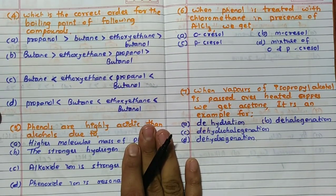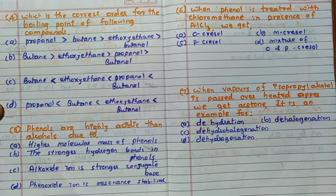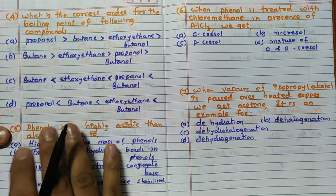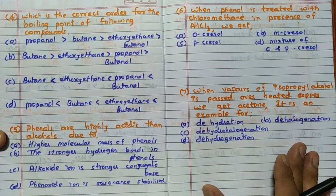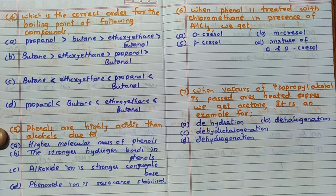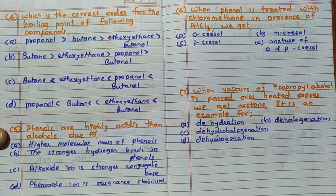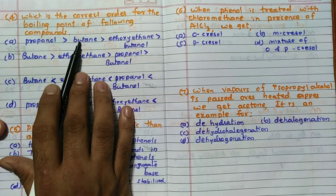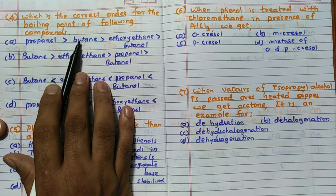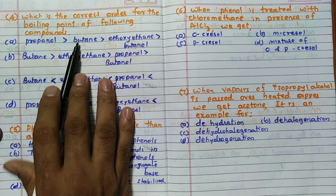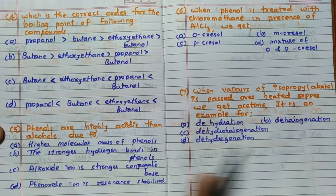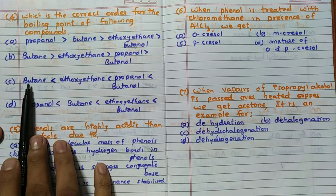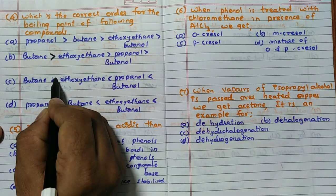Then fourth one, which is the correct order for the boiling point of the following compound. Now you can see boiling point depending on what - hydrogen bonding is one case. So generally alcohols are having more boiling point compared to ethers. The reason for that is hydrogen bond. Second factor is that as the molecular mass increases, boiling point increases. So out of the four compound, propanol, butane, ethoxyethane and butanol, definitely butane is hydrocarbon having least boiling point.